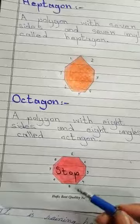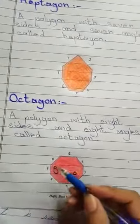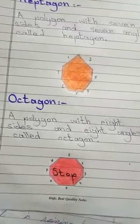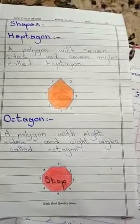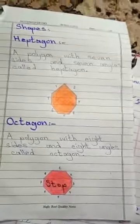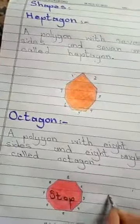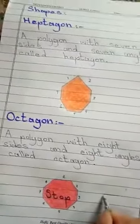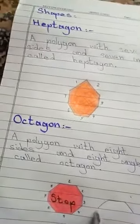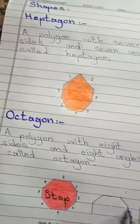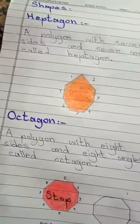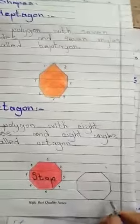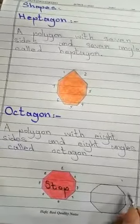Let's count the sides of the octagon: one, two, three, four, five, six, seven, and eight. Now I will show you how to draw an octagon. So this is an octagon.